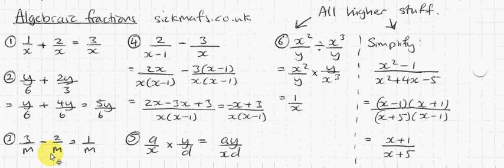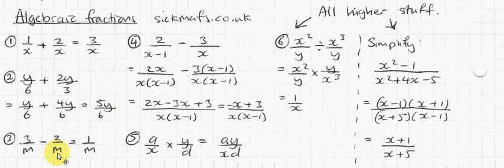This is just to demonstrate that, just like in normal fractions, adding and taking away are basically the same thing. So 3 over m take away 2 over m is 1 over m, because you've got a common denominator already — 3 take away 2 is 1.